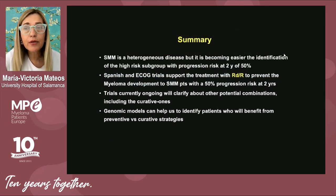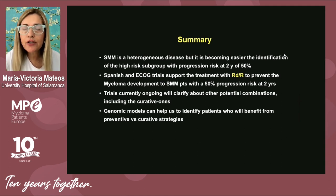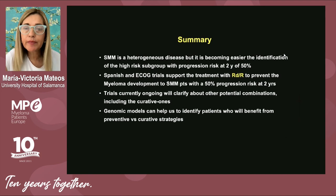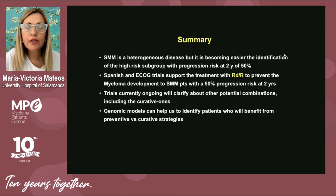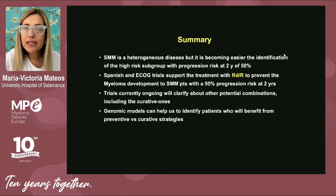In summary, smoldering myeloma is a heterogeneous disease, different from monoclonal hemopathy, and it is very important to identify the risk of progression to multiple myeloma. There are now two phase three clinical studies confirming the superiority of lenalidomide and dexamethasone versus observation as early treatment. My first recommendation is: if you are diagnosed with high-risk smoldering myeloma and there is an active clinical trial, participation is definitely the best way to move forward with further investigations in these asymptomatic diseases. Thank you very much for your attention.